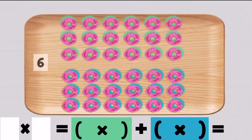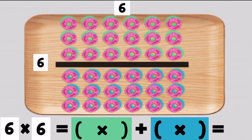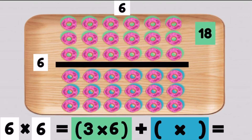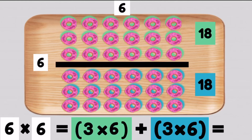This large array has six rows with six donuts on each row. We will write six times six. Let's break up the array into two smaller arrays. Our green array has three rows of six donuts, which is 18 donuts. Our blue array also has three rows of six donuts, which is also 18 donuts. We can add three times six plus three times six, which will give us 36. So six times six must equal 36 because 18 and 18 make 36.